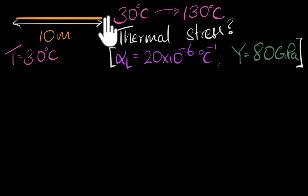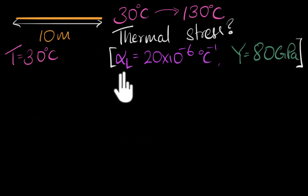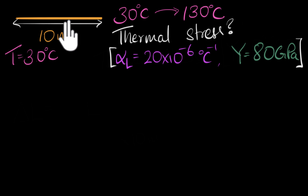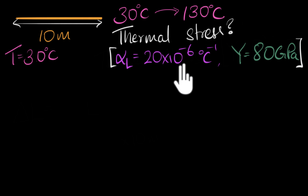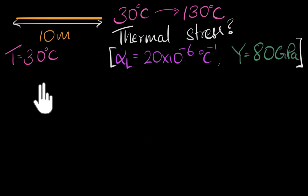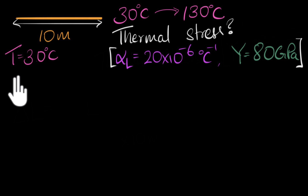We are familiar with calculating changes in length when the temperature changes, and we can do that by knowing alpha_L, the linear expansion coefficient. It tells us that if we had a one-meter-long wire and increased the temperature by one degree Celsius, the wire would expand — if it were free — by 20×10⁻⁶ meters. So let's first calculate how much this wire expands if there were no wall. Pause the video and try it yourself.